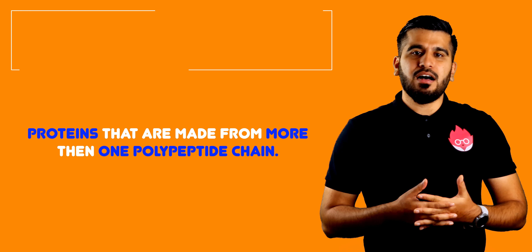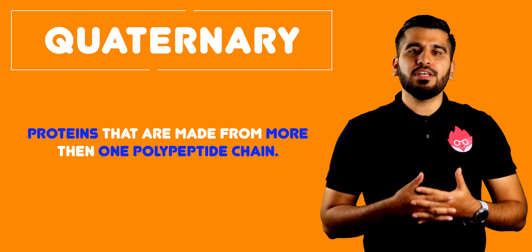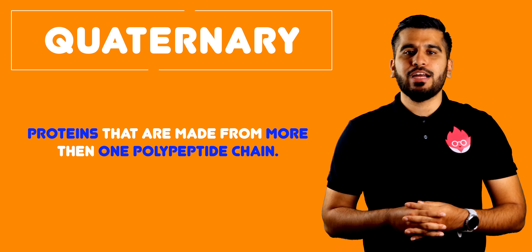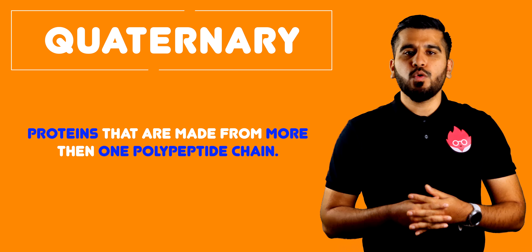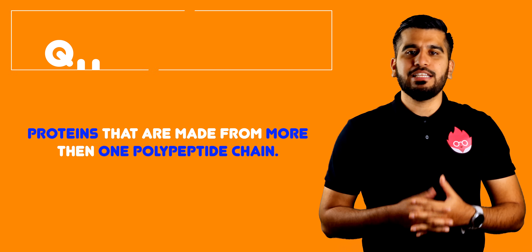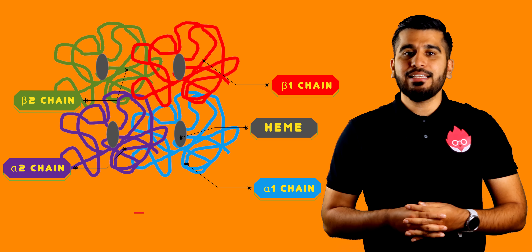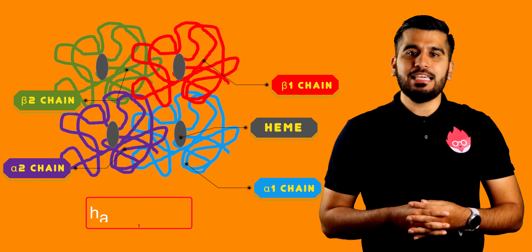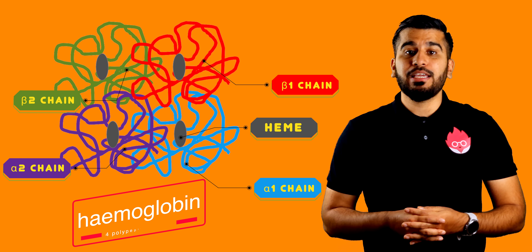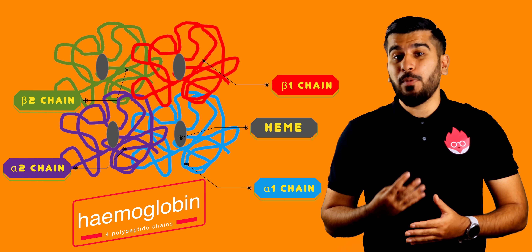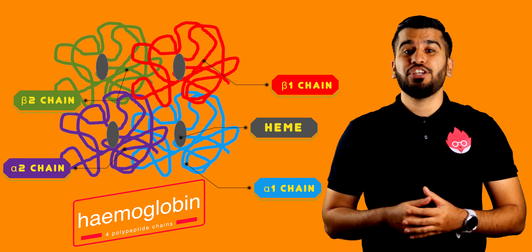Proteins that are made from more than one polypeptide chain are described as having the quaternary protein structure. An example of this is haemoglobin, which is made from four polypeptide chains.